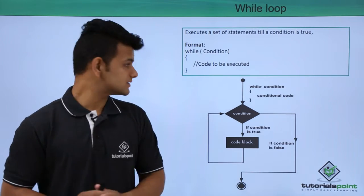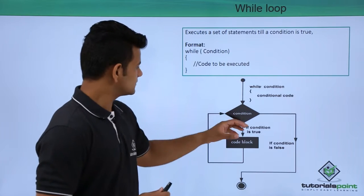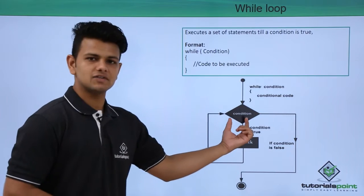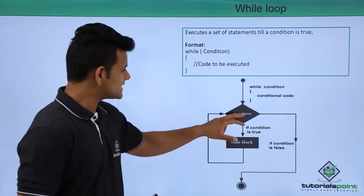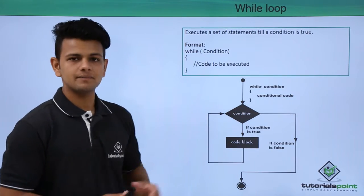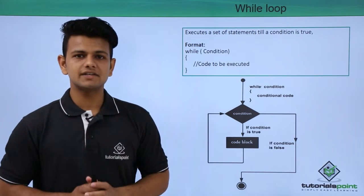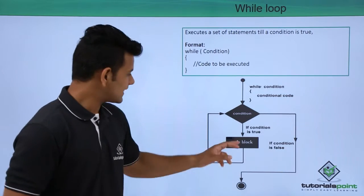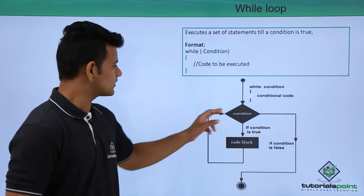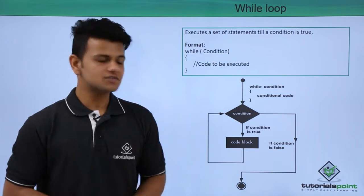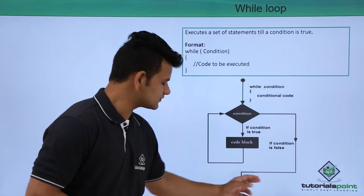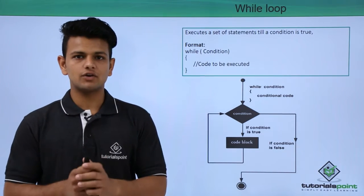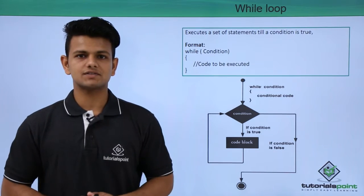The working of a while loop is: first we write the condition inside the while loop, after that it will check for the condition. If the condition is true it will execute the code block, then again it will go back to the condition. If the condition is false it will come out of the loop, otherwise if the condition is true it will continue repeating the process.